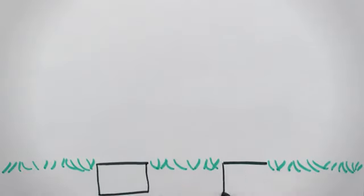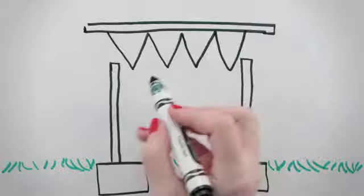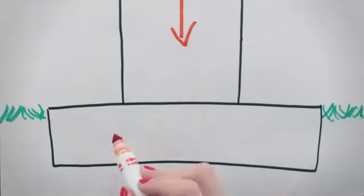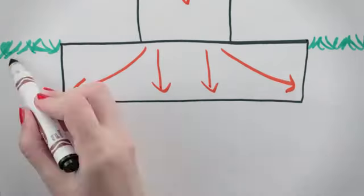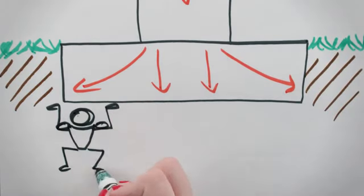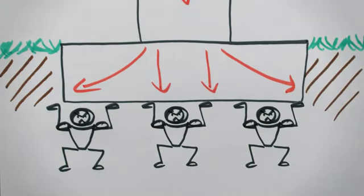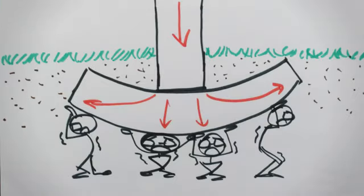Concrete footings under columns are used to transfer building loads to the ground below. As a load moves from the column to the footing, it tends to spread out. The size and thickness of the footing therefore depends greatly on the type of soil supporting it. A stiff clay soil may support a higher load than a sandy soil, but each type can cause different behavior in the footing.